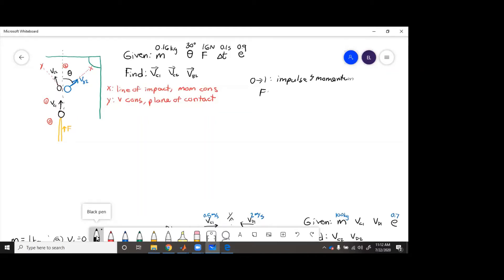So f delta t plus m vc0 equals m vc1. Well, the cue ball was originally not moving, so this is 0. And then we just rearrange f delta t over m equals vc1.